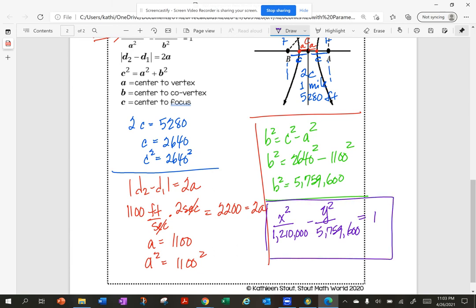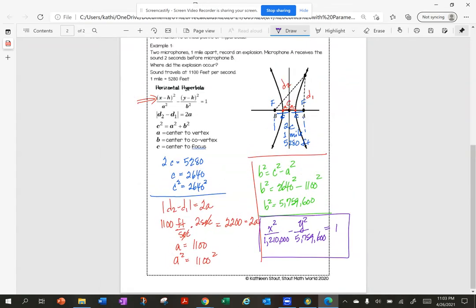So next, one of the questions was asking, where is the explosion? Well, the explosion is on that graph. So here is where the explosion is. And the question is asking me, where is it? So how I describe it on my hyperbola is I say it's on the right branch.